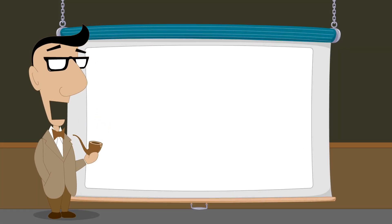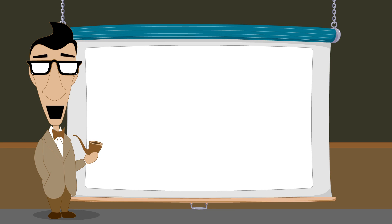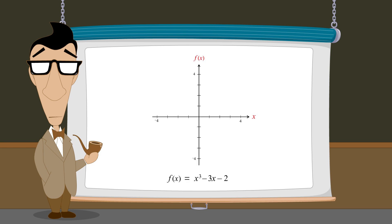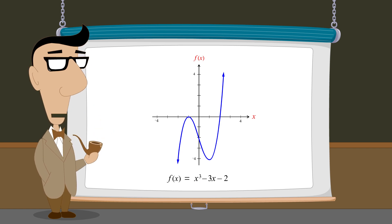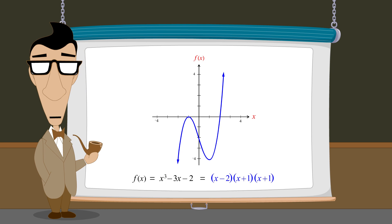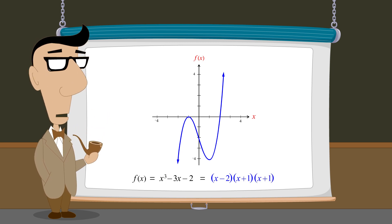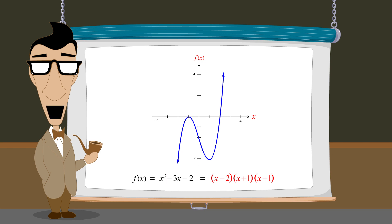So let's multiply some actual polynomials. In the lecture 'Graphing Polynomial Functions Part 2,' we graphed the polynomial function x-cubed minus 3x minus 2 and showed that this polynomial was the product of three binomial factors: x minus 2, x plus 1, and x plus 1. So let's confirm this by multiplying these three binomials and show that this produces the original polynomial.